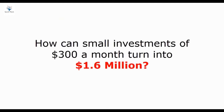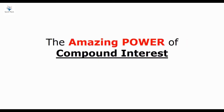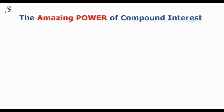So how can we turn small investments of $300 a month into $1.6 million? We can do so thanks to the amazing power of compound interest. Compounding is the wonderful way in which you can earn money not only on the original amount of an investment, but on all of the money that original amount earns along the way. Money makes money, and compounding exponentially increases the amount of money your investment earns.